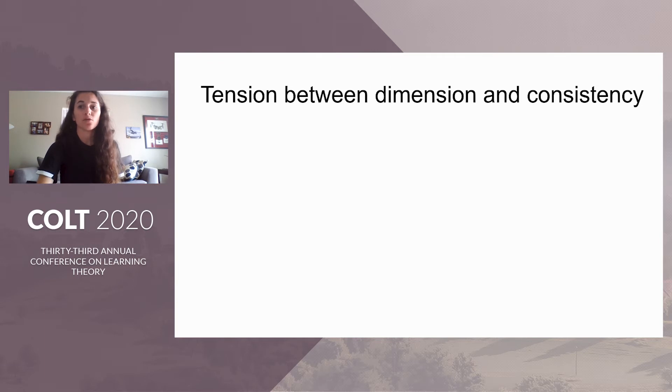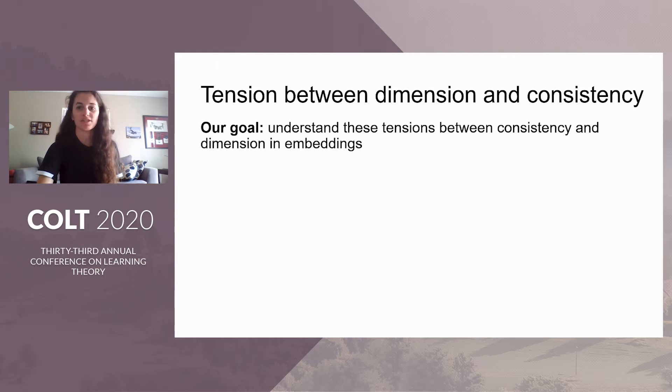Our goal is to understand a natural tension that arises between consistency and dimension embeddings. When restricting to consistent surrogates, we want these surrogates to be low-dimensional to make the optimization problem more efficient. But this natural tension arises as increasing dimensions increases the amount of degrees of freedom.